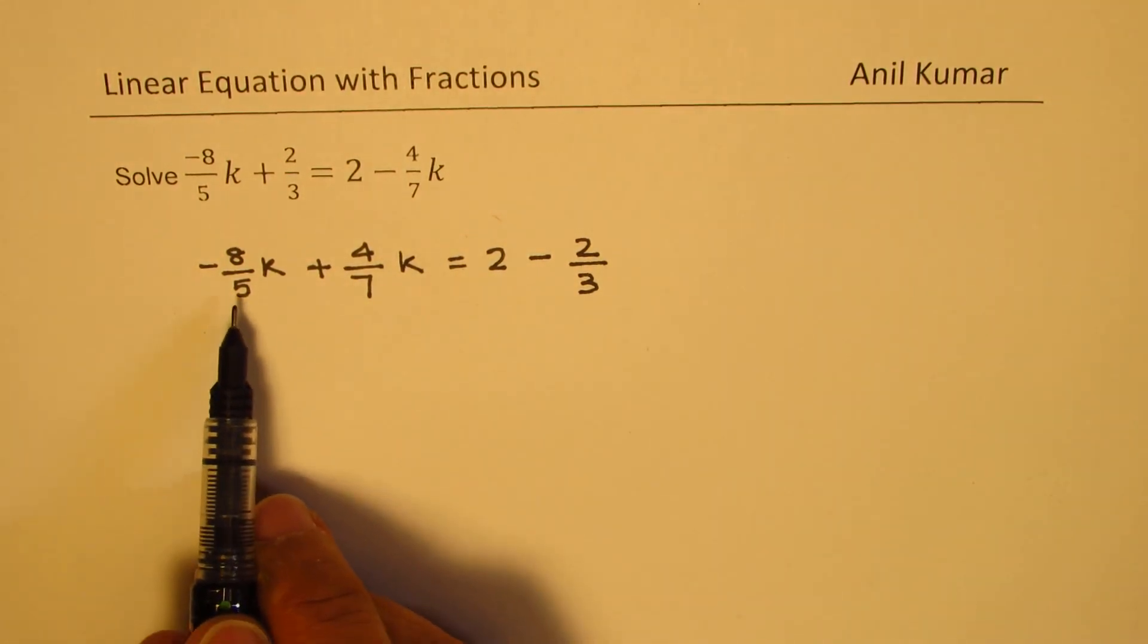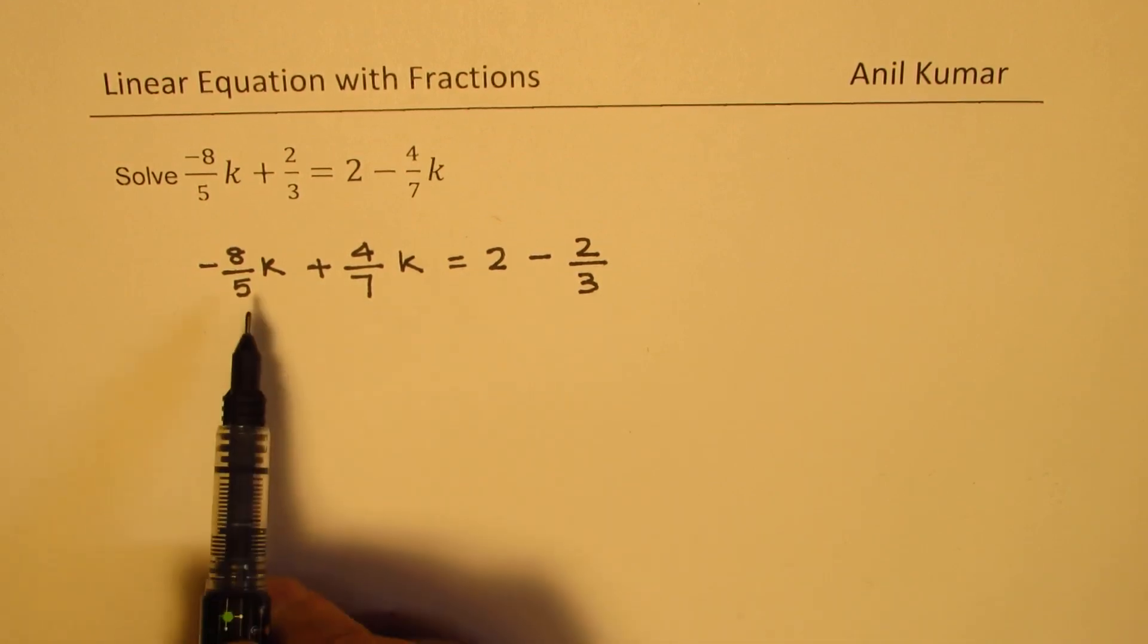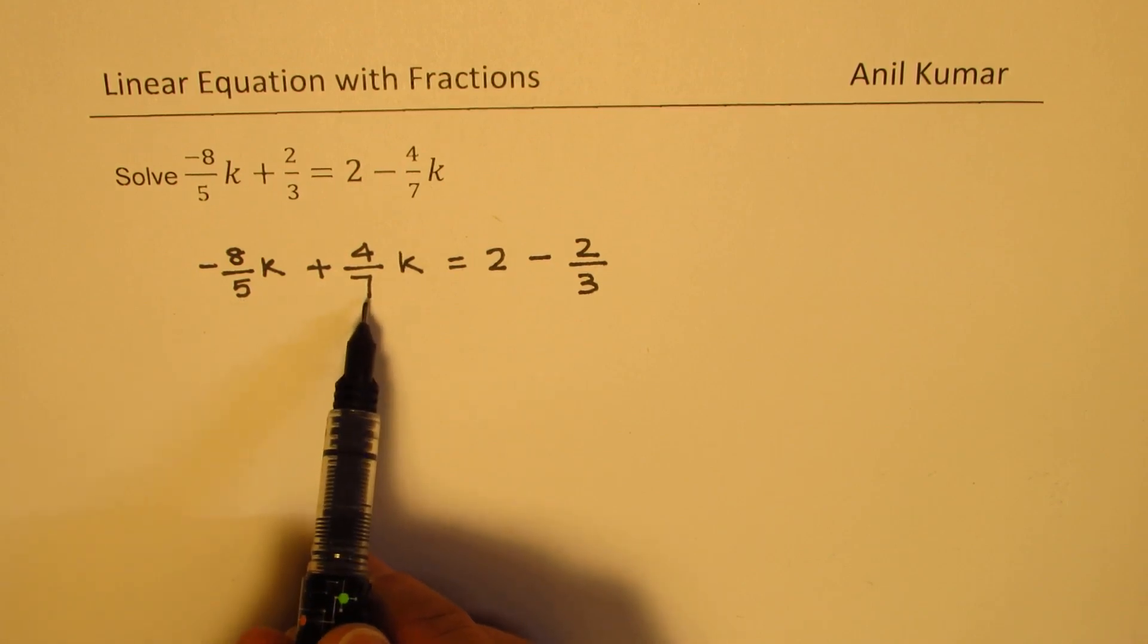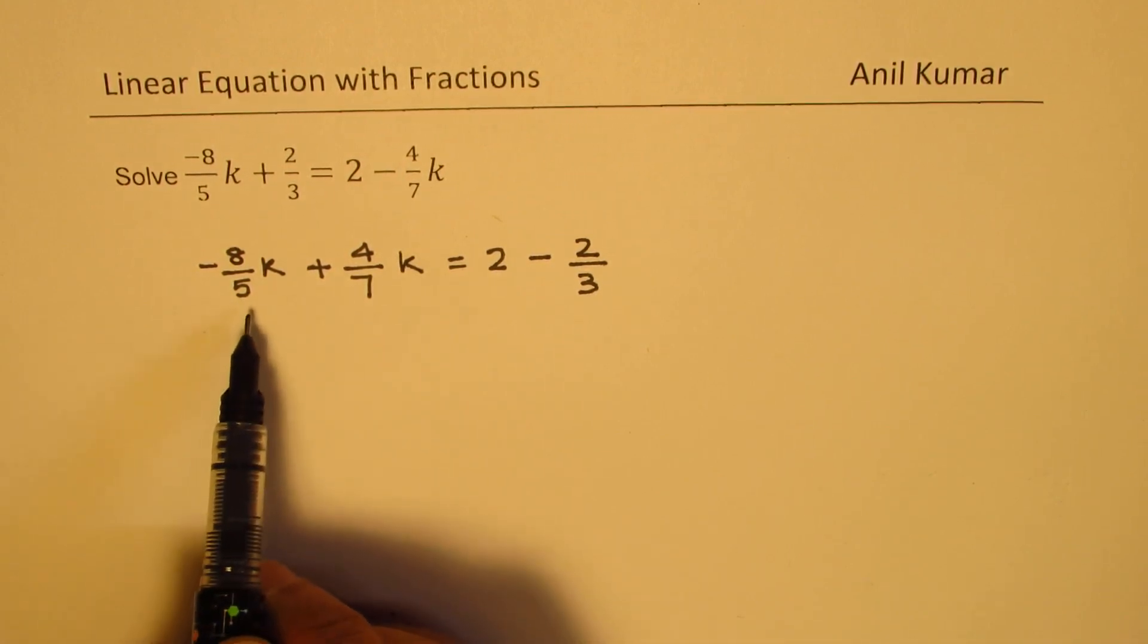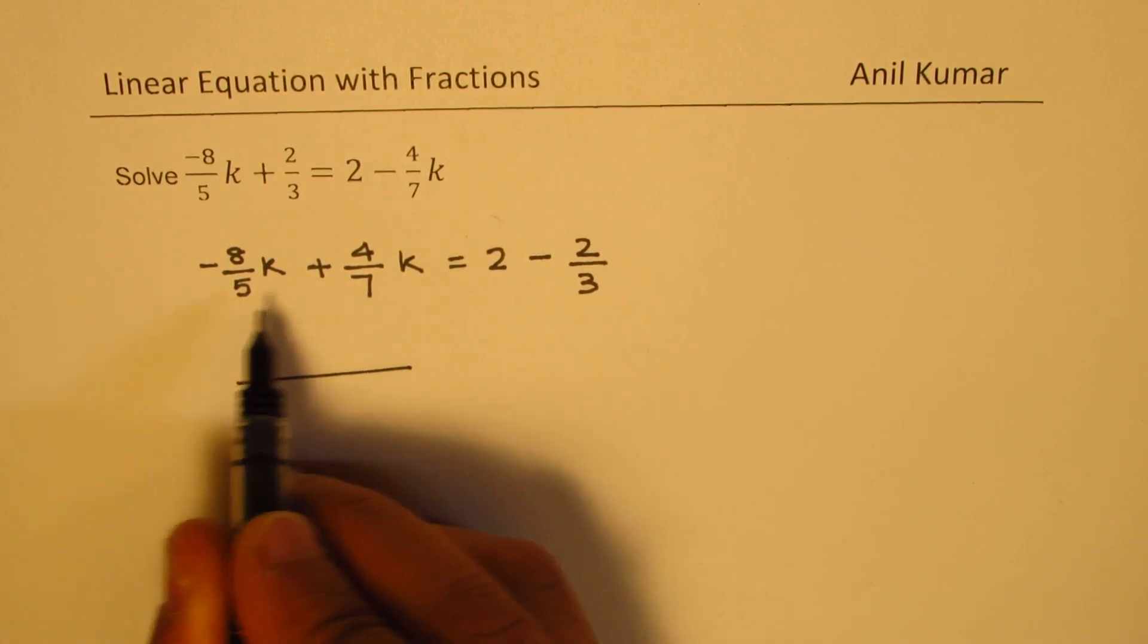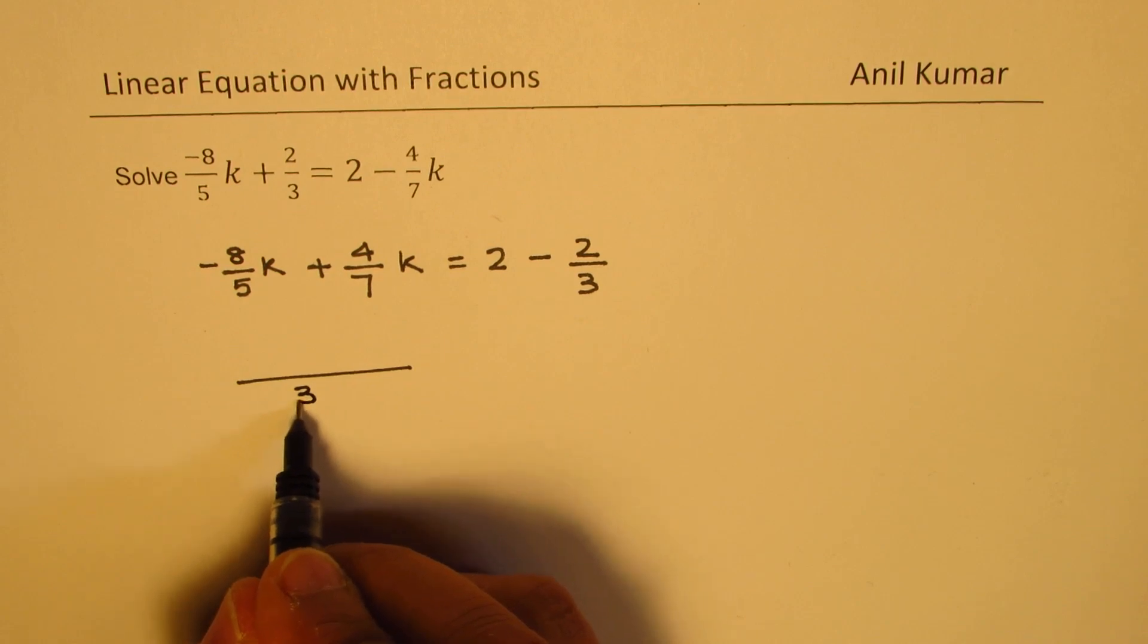So separately we'll add left and right hand sides. Left side we have the variable k. Now 7 and 5 are your denominators. So the common denominator is 35. So we can take a common denominator of 7 times 5 which is 35.